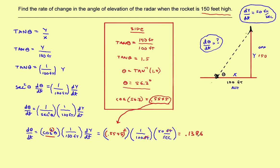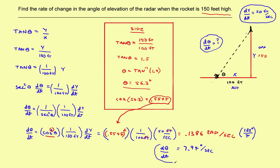Watch the units: it turns out to be 0.1386 — nothing per second, which implies radians per second. That is the rate at which the angle is changing. Most people would prefer to see that in degrees per second. To change radians to degrees, multiply by 180°/π. Doing that, you get 7.94 degrees per second — and that is the rate at which theta was changing, which is what the question asked for.